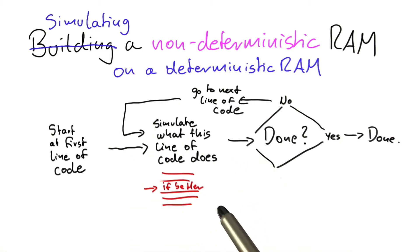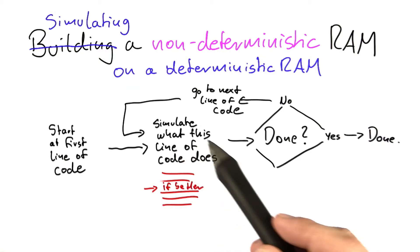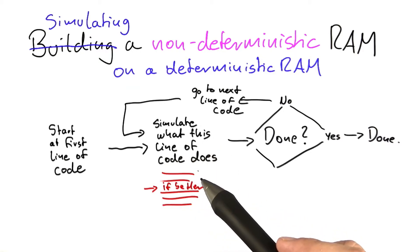The only difference is if the simulator encounters this if better here, then it has a problem because then simulating what this line of code does is not straightforward anymore. The if better might execute the first part of the code or the second part of the code around which it is written.